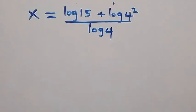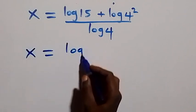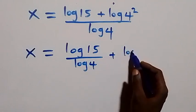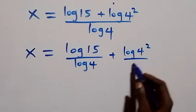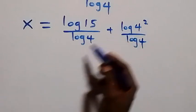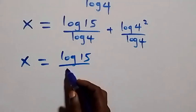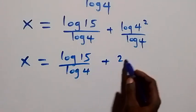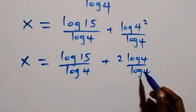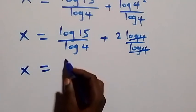From here we separate this fraction into two fractions and we have x equals to log 15 over log 4, plus log 4 squared over log 4. That is here, from the power rule of logarithm, the 2 can come down, and log 4 squared over log 4 equals 2. So this becomes x equals to log 15 over log 4 plus 2.